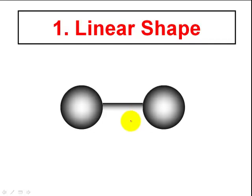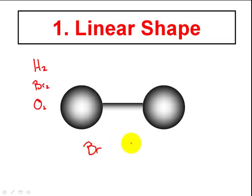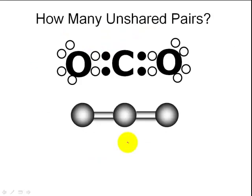The first shape we're going to look at is linear. Linear is nothing more than two elements. Any time I have two elements — whether it be H2, Br2, or O2 — the only possible shape it can be is linear. Here's bromine and another bromine; they both have seven electrons in their outer shell. Since there is no central or middle element, I'm going to have a linear shape.